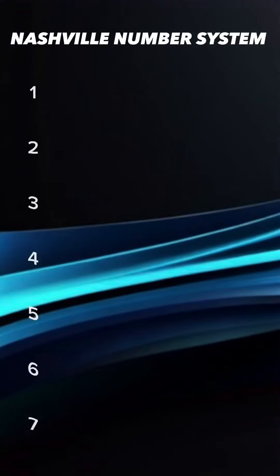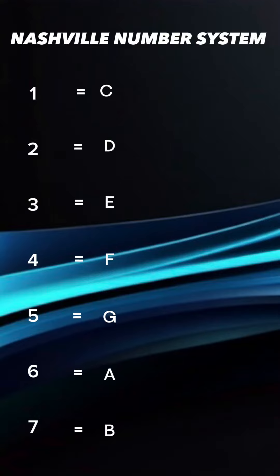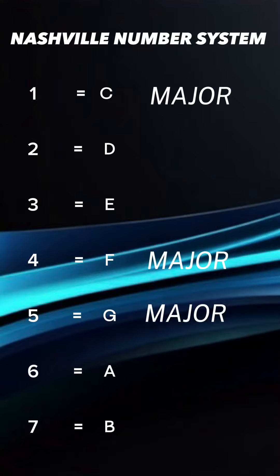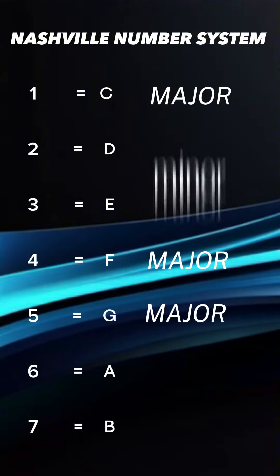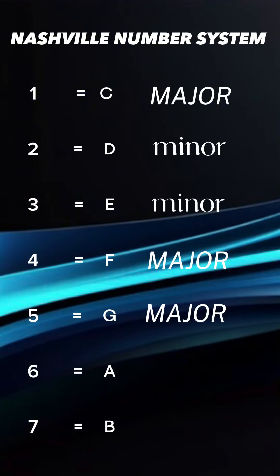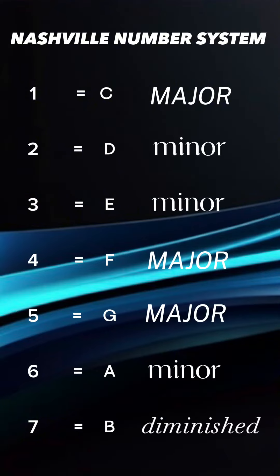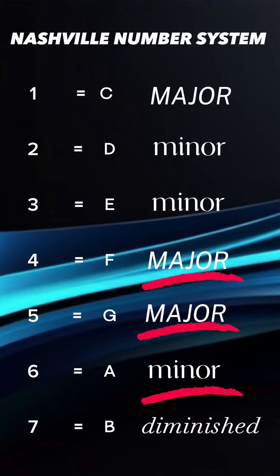The numbers on the chart correspond to the degrees of the major scale. For example, here's the key of C major. The 1, 4, and 5 will be major chords, the 2, 3, and 6 will be minor, and the 7 will be diminished. In modern worship music, your most common chords will be the major 1, 4, 5, and the minor 6.